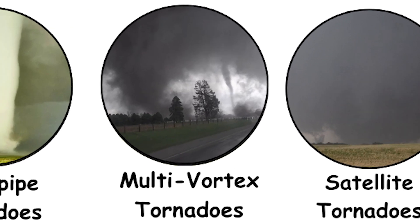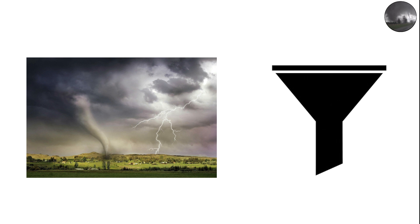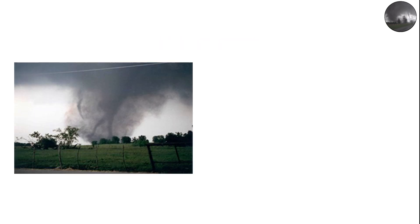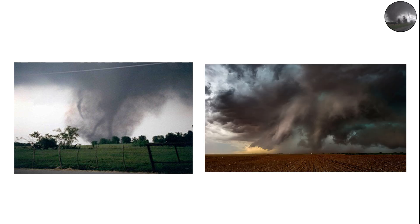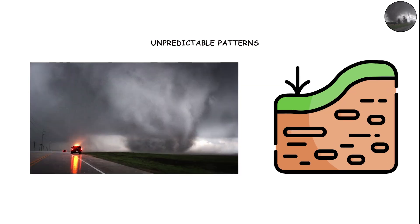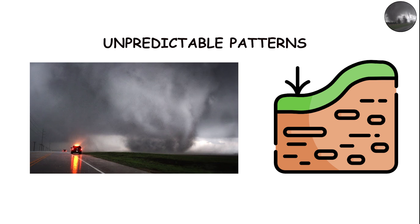Multi-vortex tornadoes — tornadoes within tornadoes. Some tornadoes don't just have one funnel; they have several smaller ones spinning around a central core. These are called multi-vortex tornadoes. They look chaotic, with multiple suction vortices tearing across the ground in unpredictable patterns.